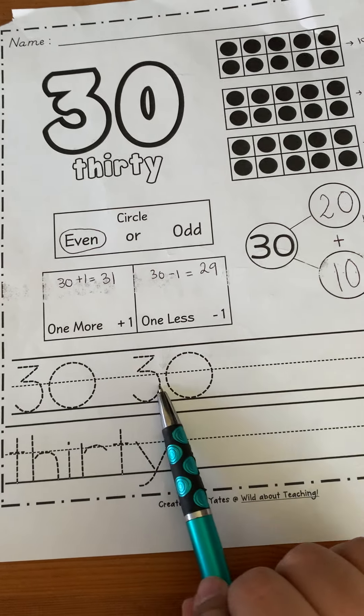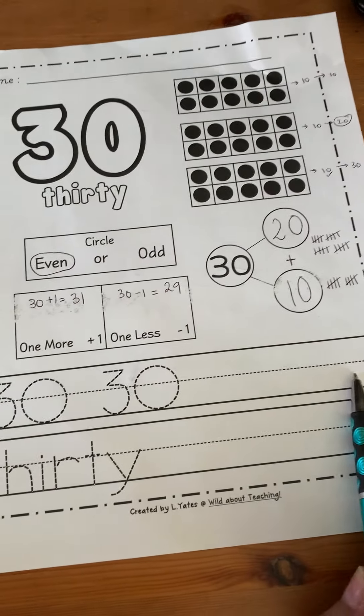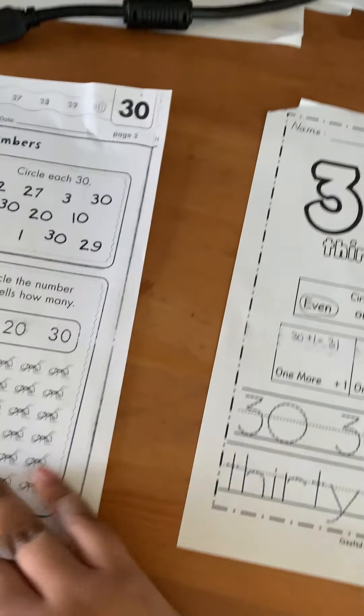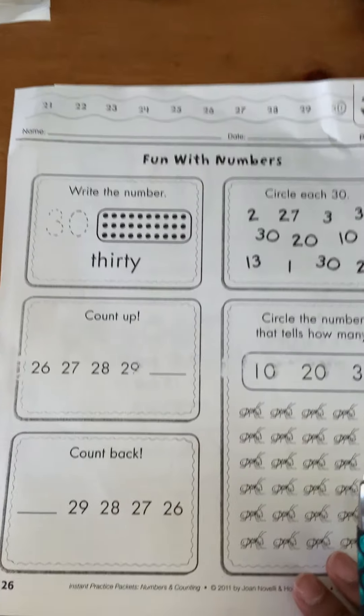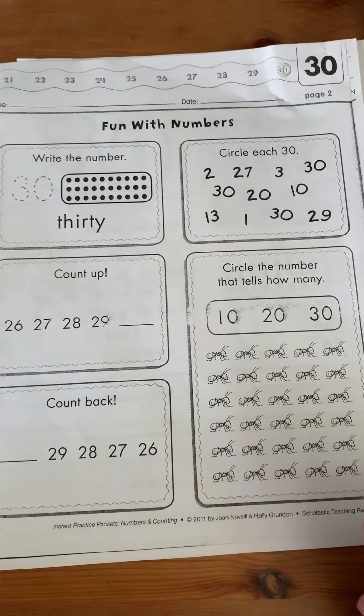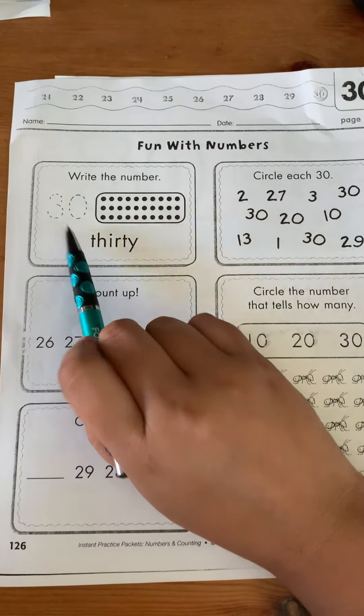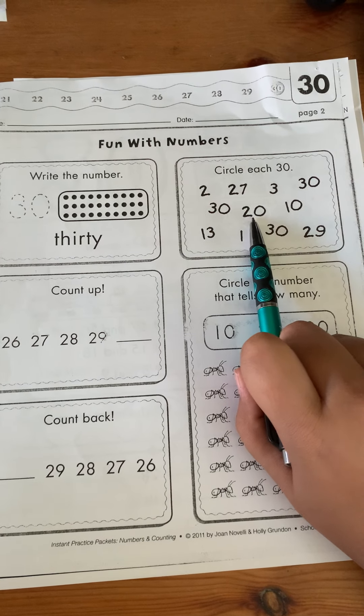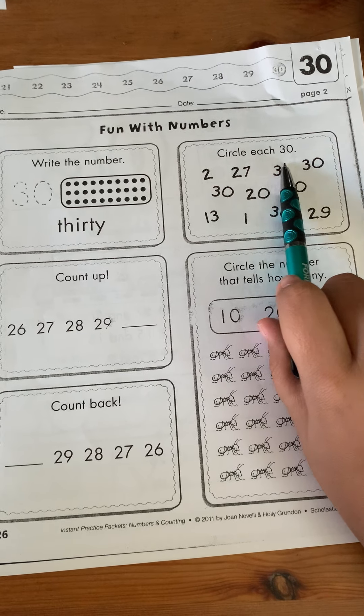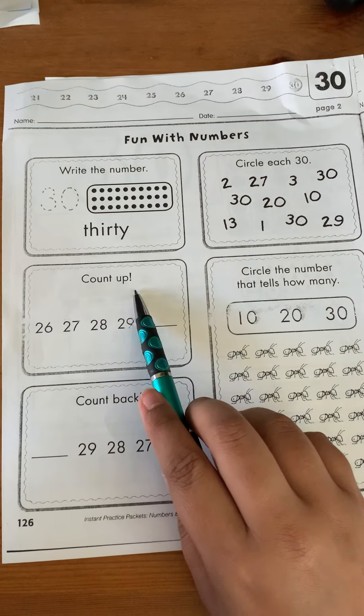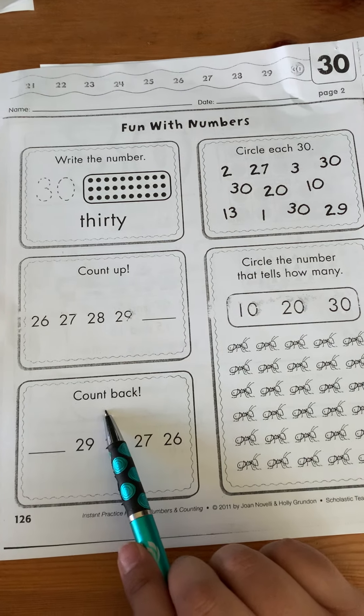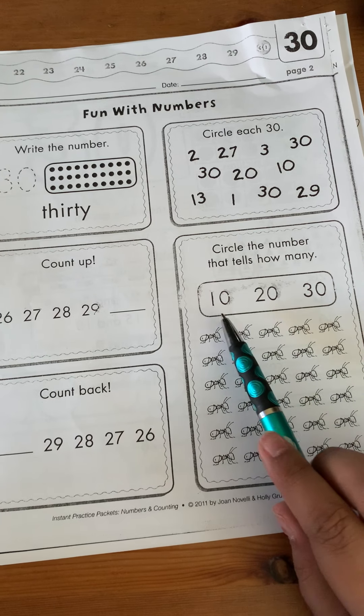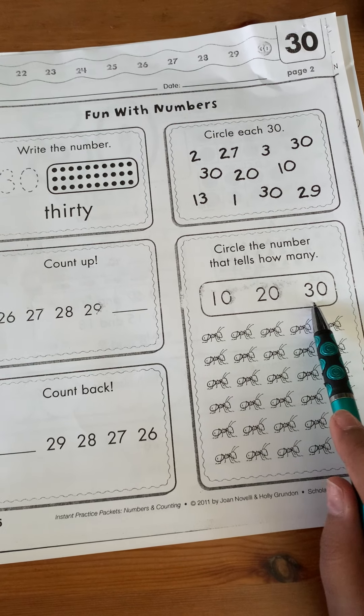Now your job is to trace the 30s and then write 30. And then trace the word 30 and write the word 30. And then you are going to grab your fun with numbers page and go ahead and do this. You're going to trace the number, count the dots, circle each 30 you find in this box. Then it says count up, count back, and then count the number of ants and circle the correct number that you count.